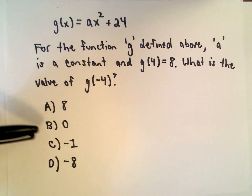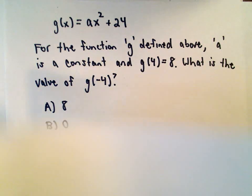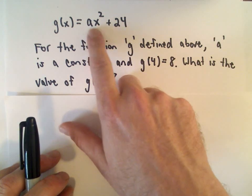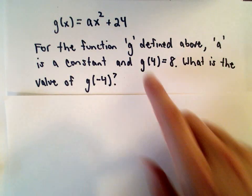So we've got the choices: 8, 0, -1, or -8. Notice if we substitute in -4 immediately, we would still be left with the a, so we wouldn't be able to determine a value.